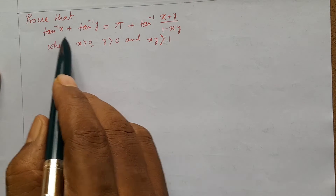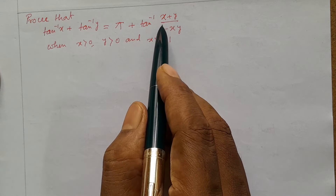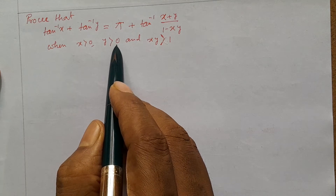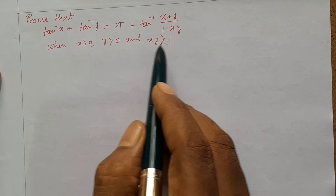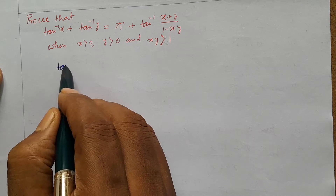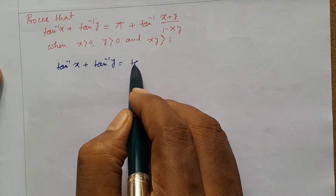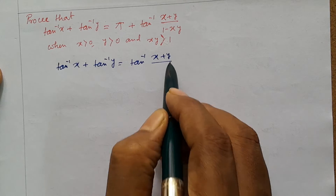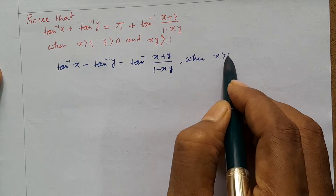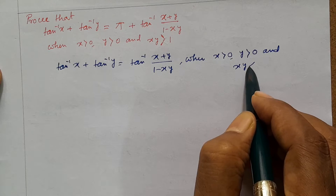Prove that tan inverse x plus tan inverse y equals pi plus tan inverse of (x plus y) by (1 minus xy), when x greater than 0, y greater than 0, and xy greater than 1. We know that tan inverse x plus tan inverse y equals tan inverse of (x plus y) by (1 minus xy) when x greater than 0, y greater than 0, and xy less than 1.